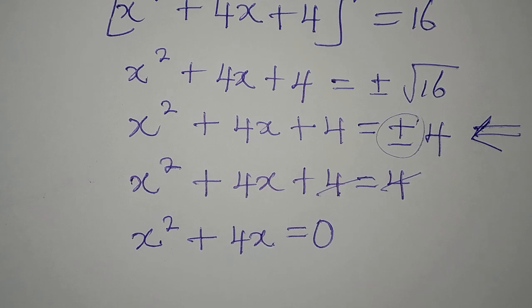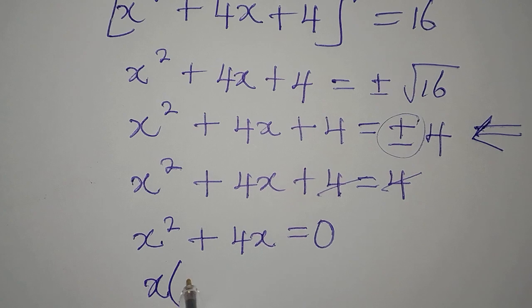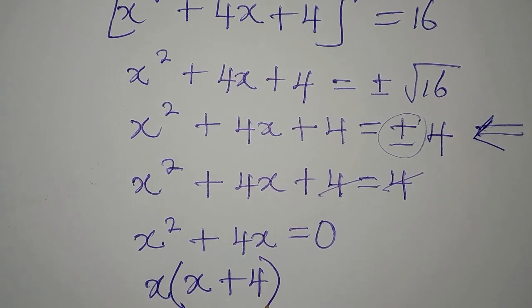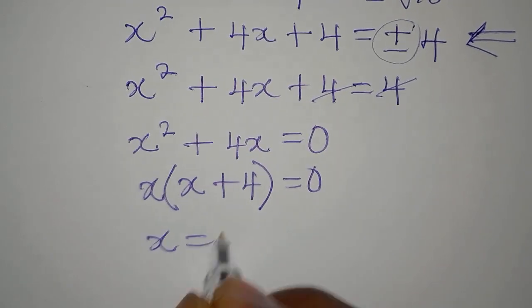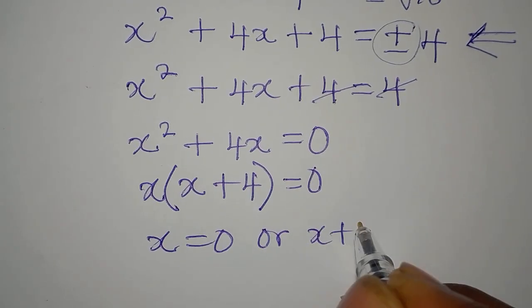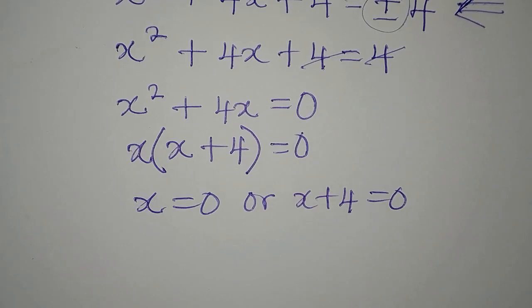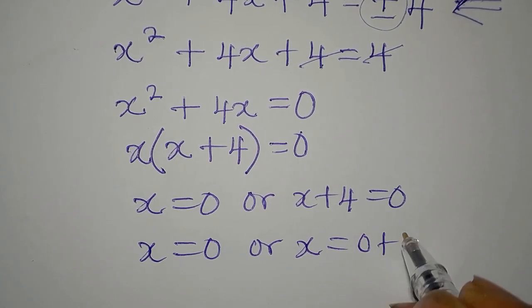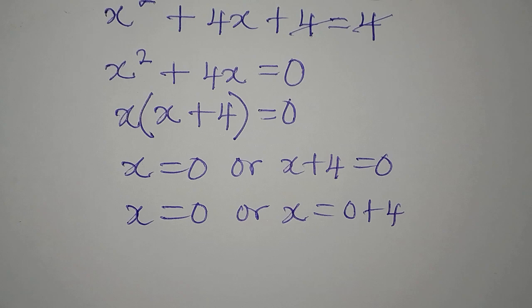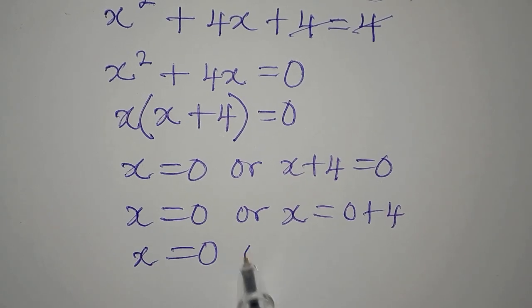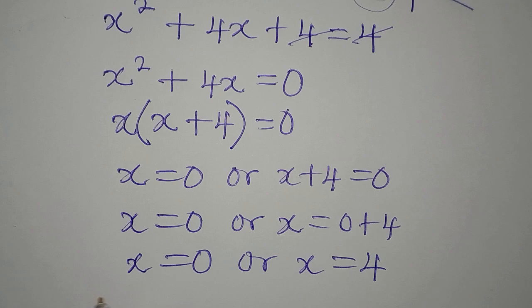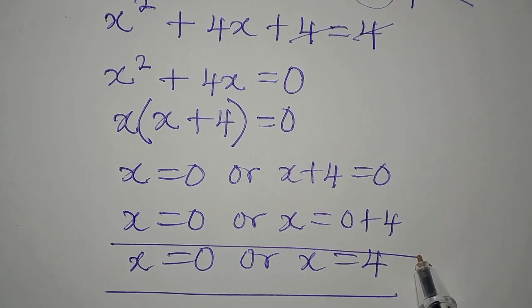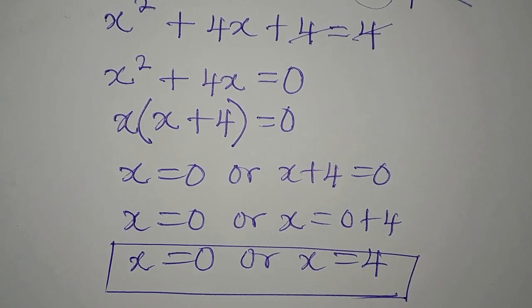We factorize to get x(x + 4) = 0. So either x = 0 or x + 4 = 0, giving x = -4. From the positive case we have two solutions: x₁ = 0 and x₂ = -4.